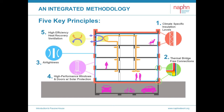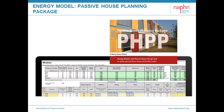We'll look at the role of insulation in thermal bridge-free connections. A thermal bridge is where there is a break in the insulation and heat can more easily escape, like a cold metal window frame in winter. We'll look at air tightness, high-performance windows and doors with solar protection, and high-efficiency heat recovery ventilation. These are the key principles, and all these key areas are entered into the Passive House Planning Package, or PHPP Energy Model.